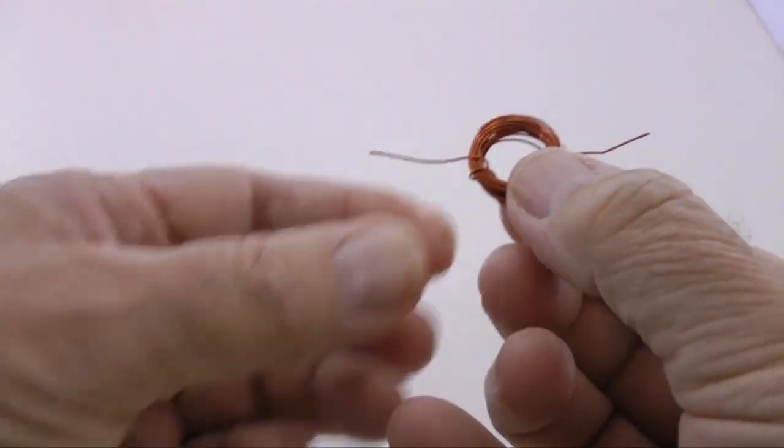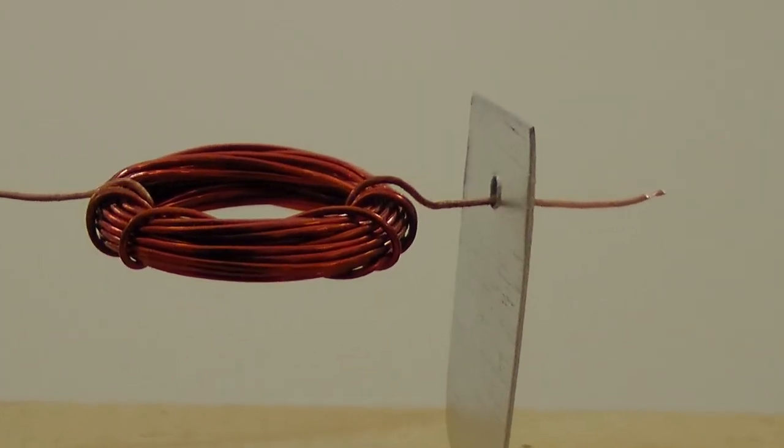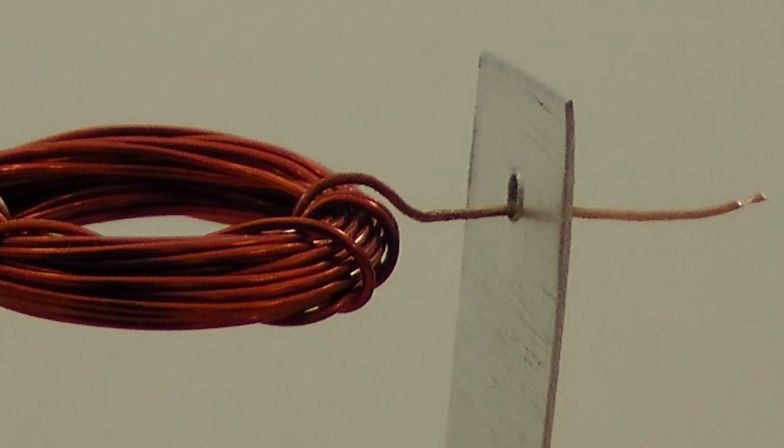This wire is coated with an insulator, typically an enamel. We must remove the insulation from the two leads to allow electricity to enter the coil.